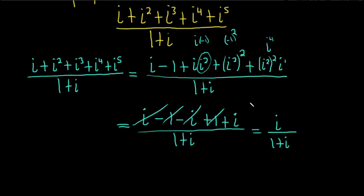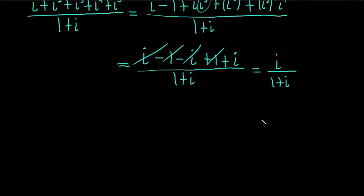And we can do more with this, right? We can do more. Remember, when you have a division of complex numbers like this, what you can do is you can rationalize. So basically, you multiply the numerator and denominator by the complex conjugate, which is 1 minus i. So this is 1 minus i over 1 minus i.